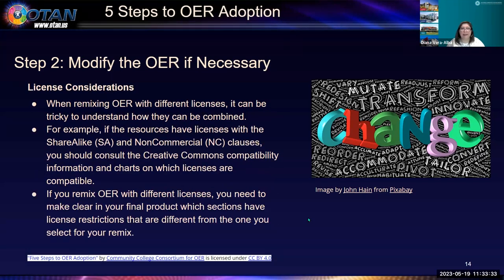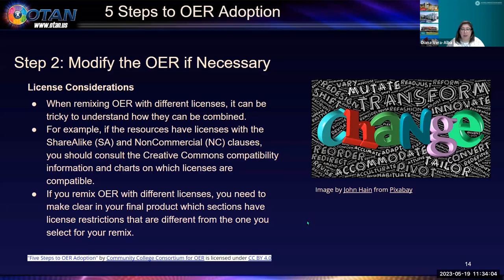And of course, there are licensing considerations when remixing OER with different licenses — it can be tricky to understand how they can be combined. For example, if the resources have licenses with Share Alike (SA) and Non-Commercial clauses, you should consult the Creative Commons compatibility information and charts on which licenses are compatible. I have a chart for you today that's really easy to use, and I'll share it in a few slides.